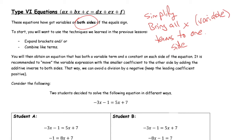It is recommended to move the variable expression with a smaller coefficient to the other side by adding the additive inverse to both sides. The reason for doing that is so that you can avoid division by a negative.